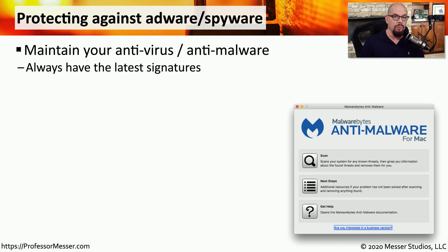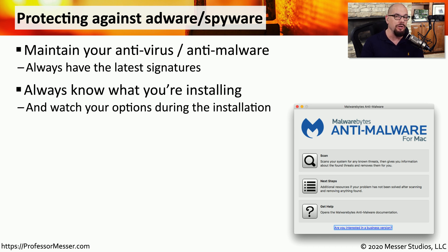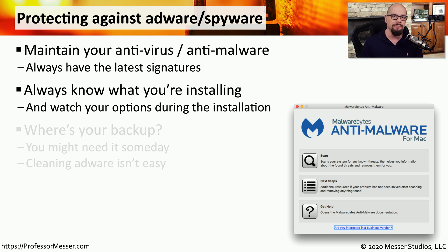Like most malware prevention, you need a good antivirus and anti-malware software installed, and you want to be sure your signatures are always up to date. You also want to be sure you know exactly what you're installing. Installing unknown software from a third-party website is probably a pretty high risk for adware or spyware.